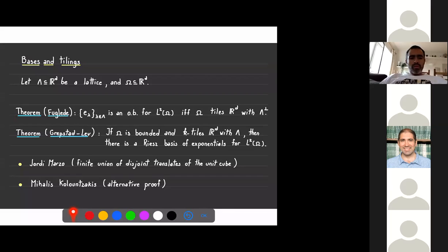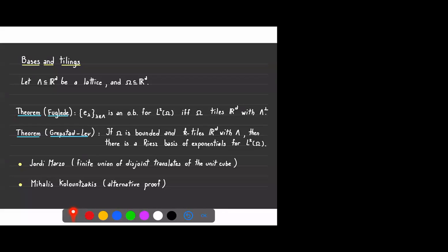After that, Michaels Kolountzakis also gave an alternative proof and was able to say something more about the structure. In both results we are dealing with lattices, which means there is a group acting in both situations. When you have a group action on your problem, you can have a reduction of your problem. With Elona Agora and Carlos Cabrelli, we studied these problems from this point of view, trying to use this reduction that comes from the lattice.